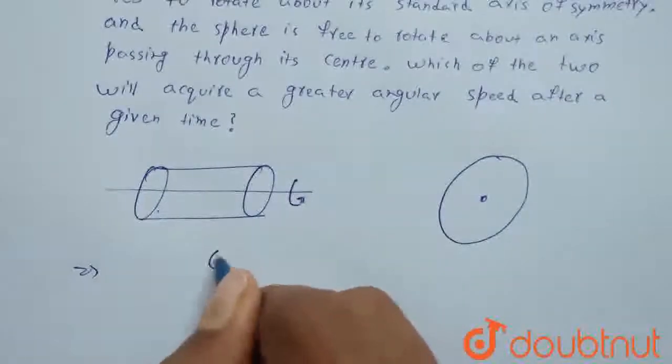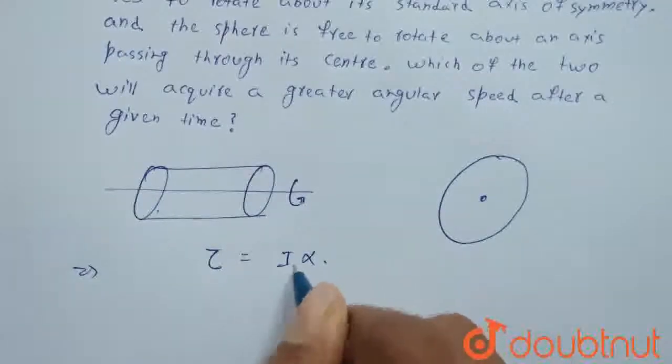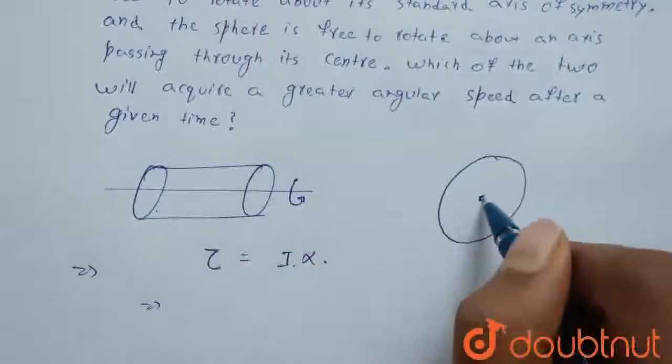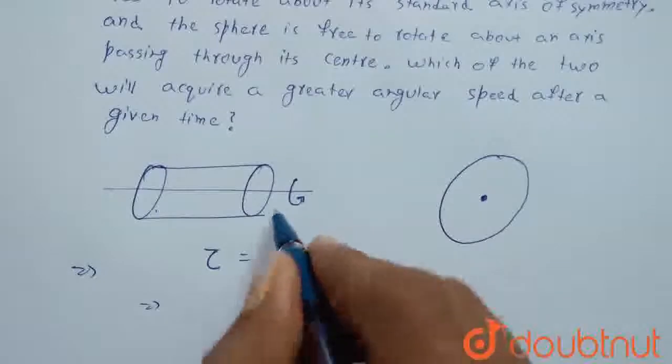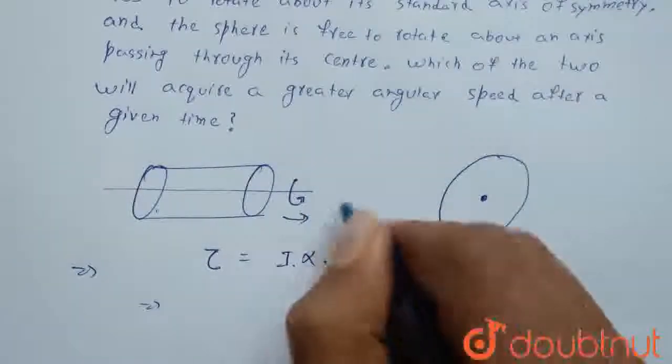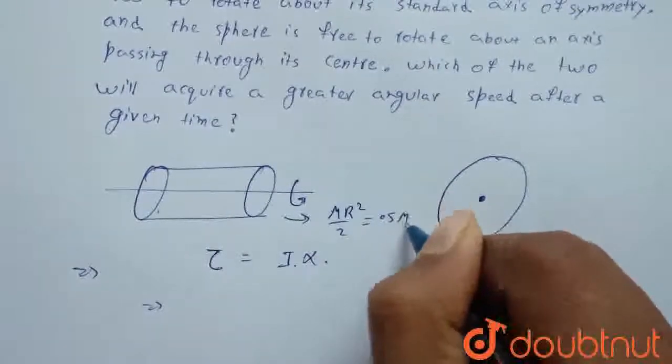As we know, torque equals I times α. In both cases, we have the moment of inertia known. Moment of inertia for a cylinder is MR² divided by 2, which is 0.5 MR².